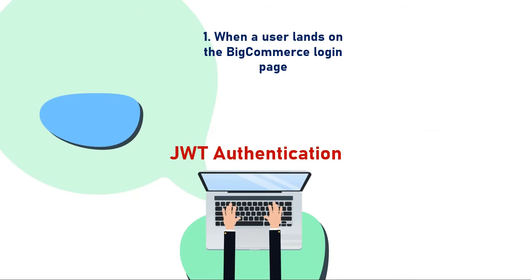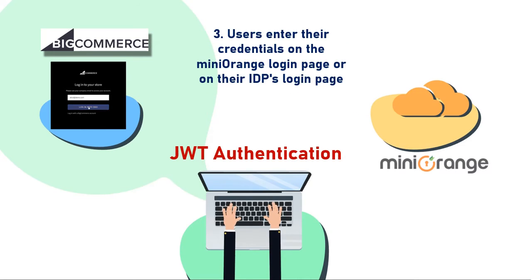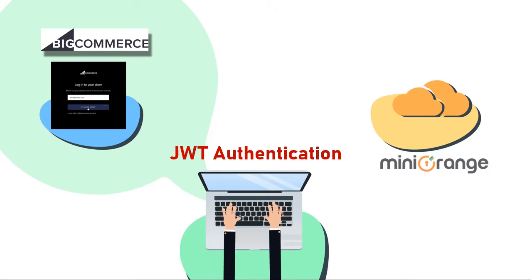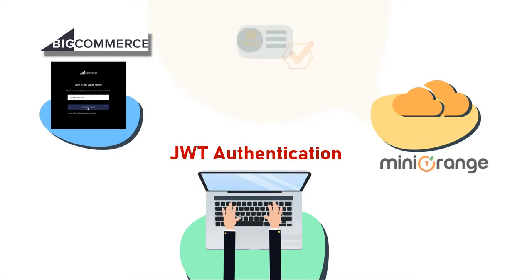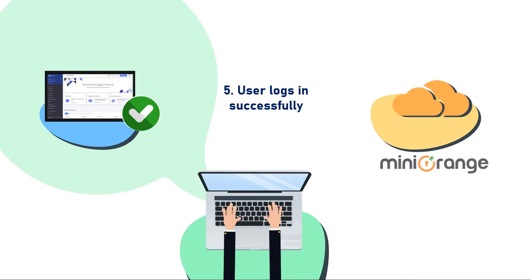When a user lands on the BigCommerce login page, a JWT request is sent to MiniOrange. Users enter their credentials on the MiniOrange login page or on their IDP's login page. Once the user is authenticated, MiniOrange sends a JWT response token back to BigCommerce. BigCommerce verifies the token and logs the user in.